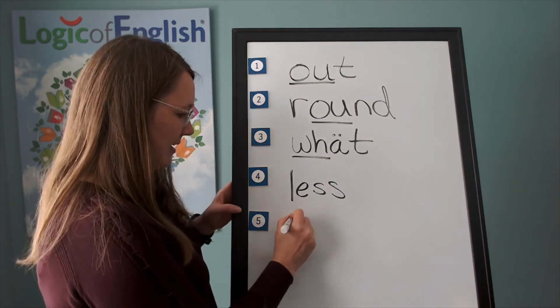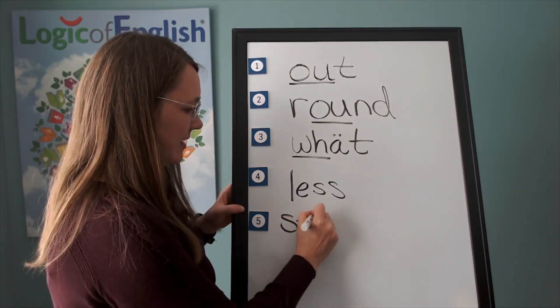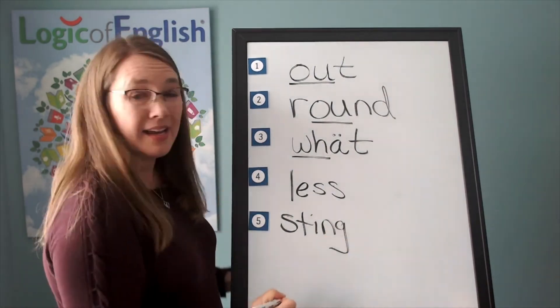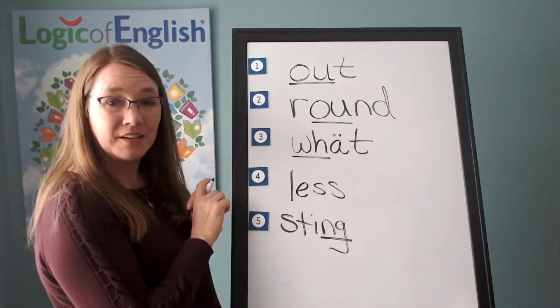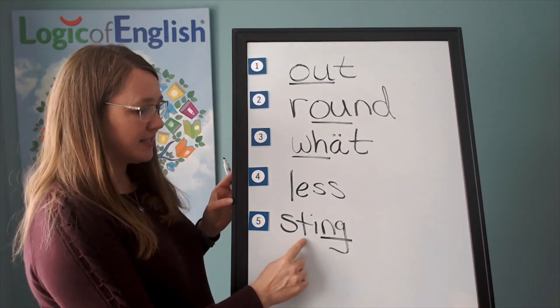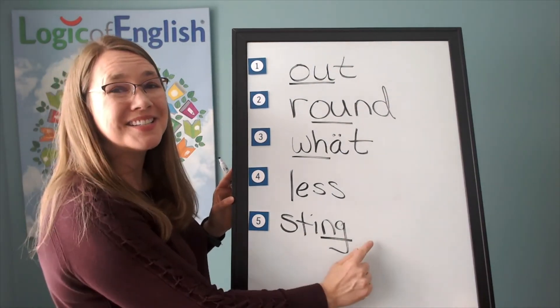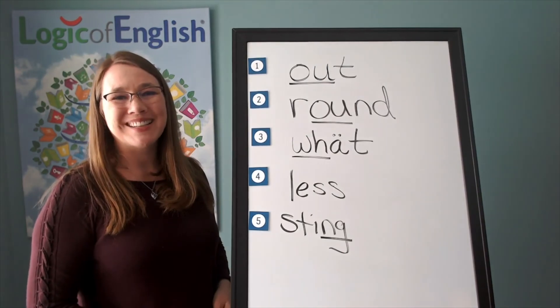Now help me write it. S, t, i, n. And how will we mark it? We'll underline the n. Let's read it together. St, i, n. Sting. Great work today.